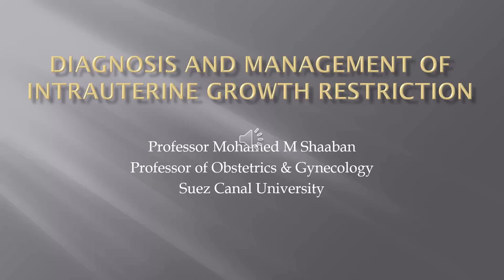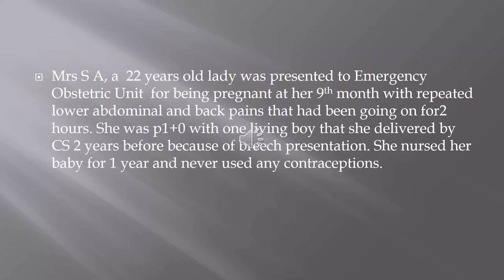Our talk today is about diagnosis and management of intrauterine growth restriction. We start with the case presentation: Mrs. S.A., a 22-year-old lady, was presented to the emergency obstetric unit being pregnant at her ninth month with repeated lower abdominal and back pains going on for two hours. She was para one plus zero, with one living boy delivered by cesarean section two years before because of breech presentation. She nursed her baby for one year and never used any contraception.